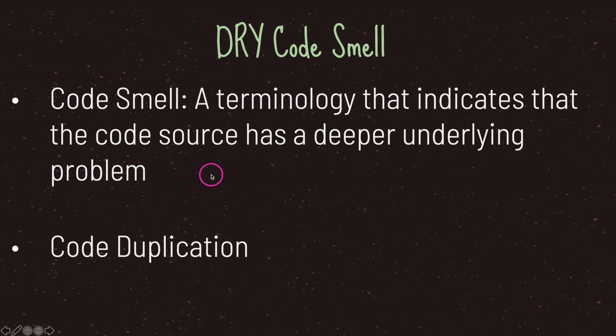A code smell is a terminology that indicates the source code has a deeper underlying problem. If your code is breaking the DRY principle it's fairly easy to spot — if you see code duplication in your classes or even among multiple classes, you know you are breaking the DRY principle.